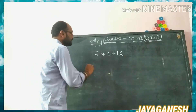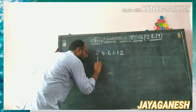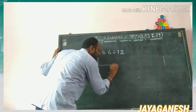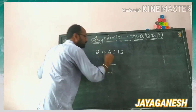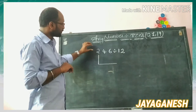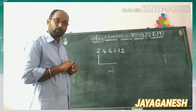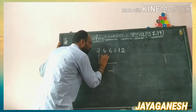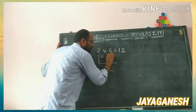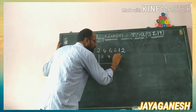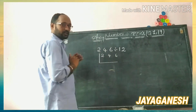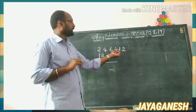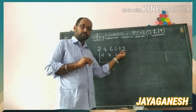Take one LCM bracket — we know what an LCM bracket looks like. In this LCM bracket, whatever the question is given, you write it on the top. Write it: 2, 4, and 6.